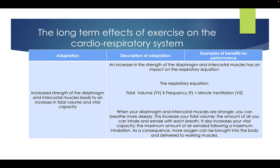Increased strength of the diaphragm and the intercostal muscles leads to an increase in tidal volume and vital capacity. This has an impact on the respiratory equation: tidal volume times frequency equals minute ventilation. When your diaphragm and intercostal muscles are stronger, you can breathe more deeply. This increases your tidal volume — the amount of air you can inhale and exhale with each breath — and also increases your vital capacity, the maximum amount of air exhaled following a maximum inhalation. As a consequence, more oxygen can be brought into the body and delivered to the working muscles.